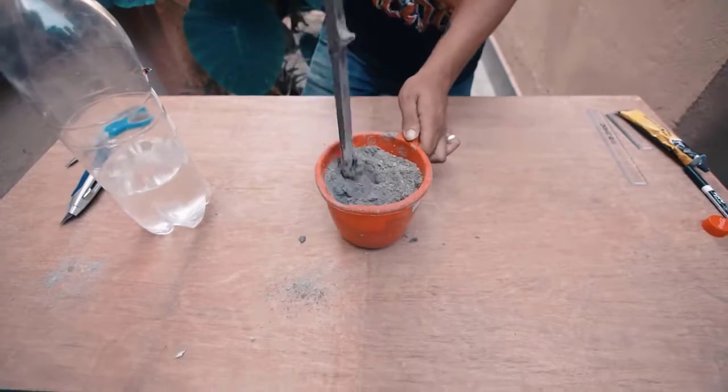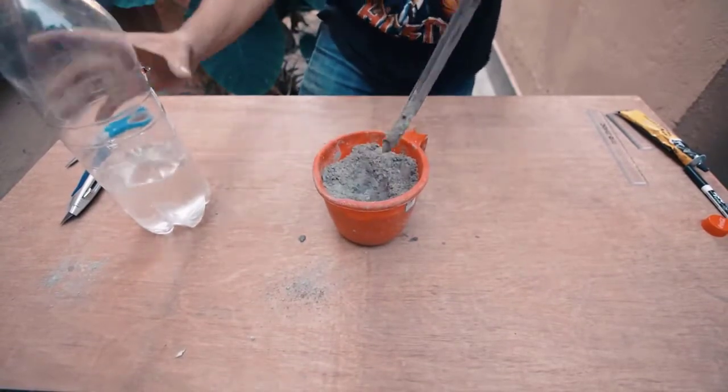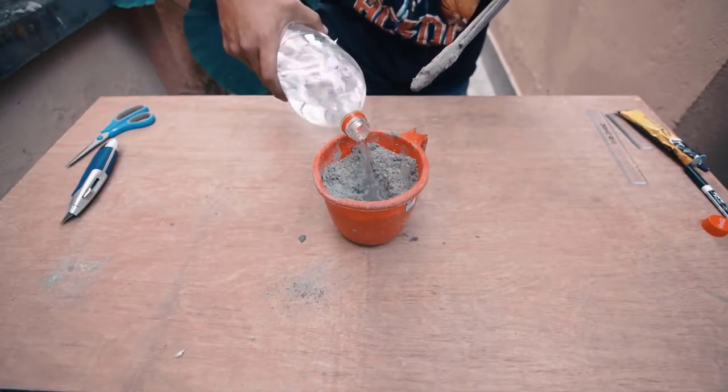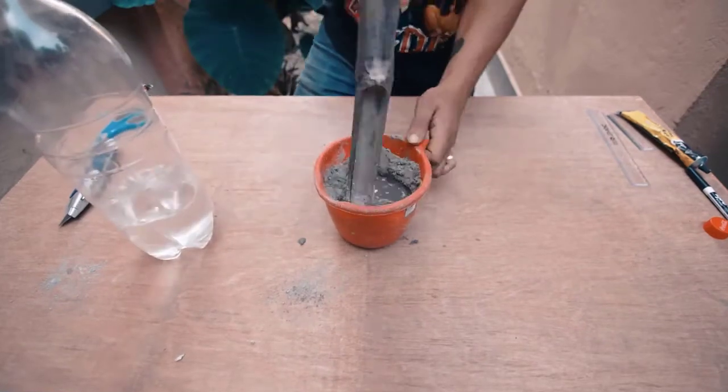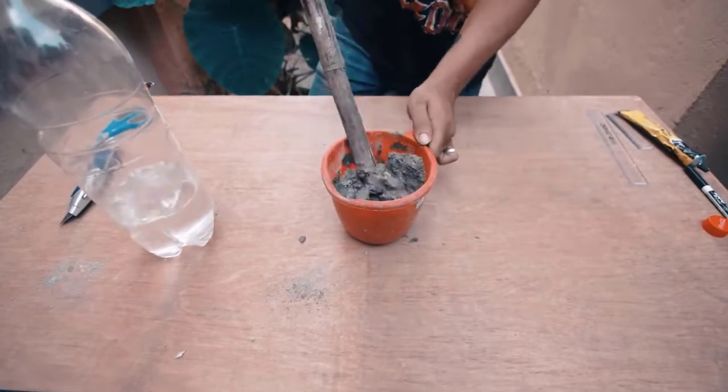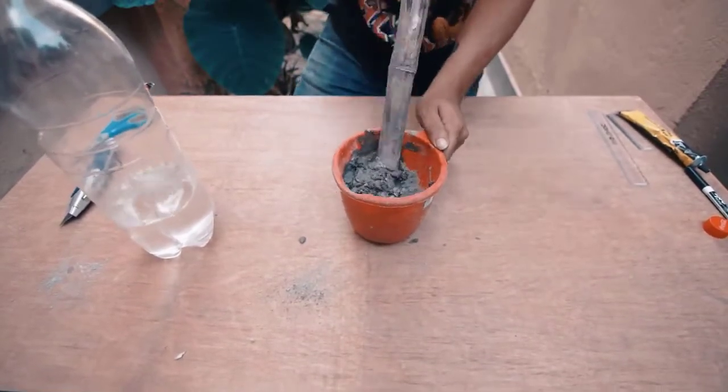Once they're well mixed we're going to start to add a bit of water. Now it's easy to add too much water so add the water slowly. What we're after here is to get the consistency of say a thick milkshake or perhaps some toothpaste.